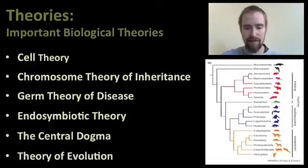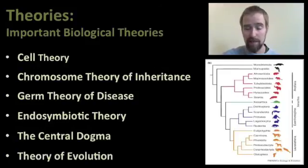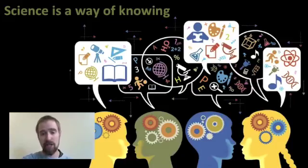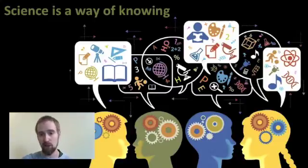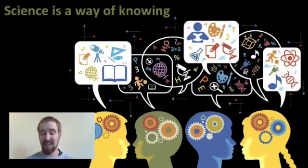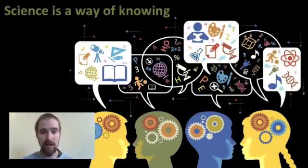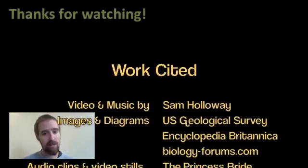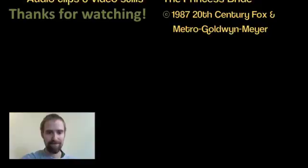We're also going to learn about the theory of evolution, which helps explain where the diversity of life came from, how it's changing over time, and how it helps us understand our place among the animal kingdom. Remember, science is a way of knowing, and theories are a really important piece of that puzzle — they're big-picture ideas that explain many different observations and help us make predictions in new situations. Hopefully you now understand a little better why theories are such important tools in science. Feel free to watch this video again as needed, and we'll talk more next time in class.